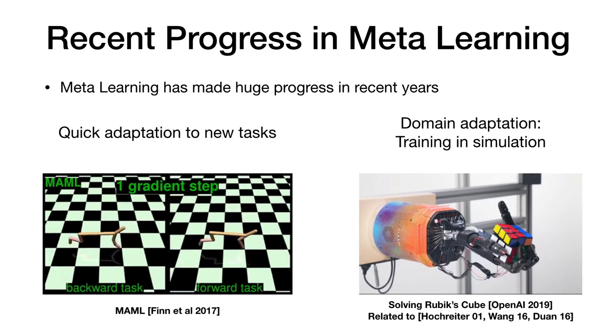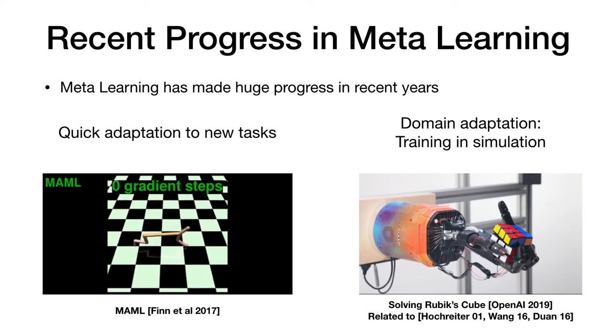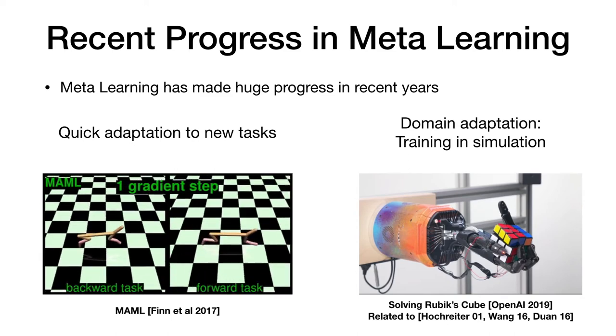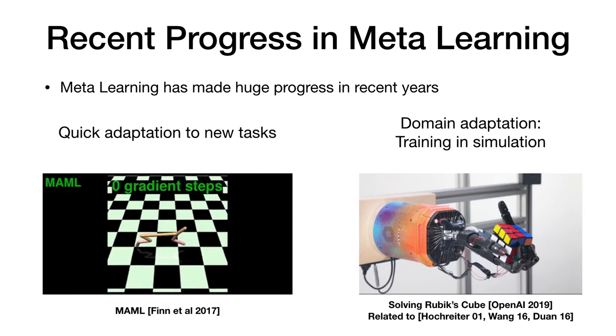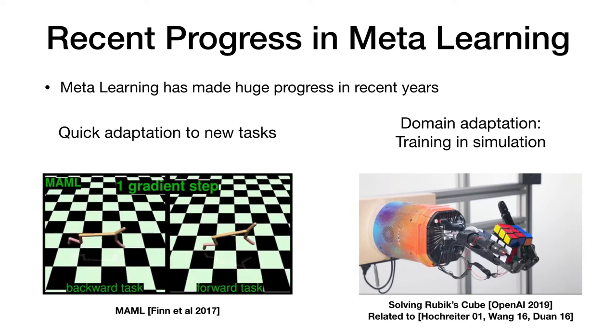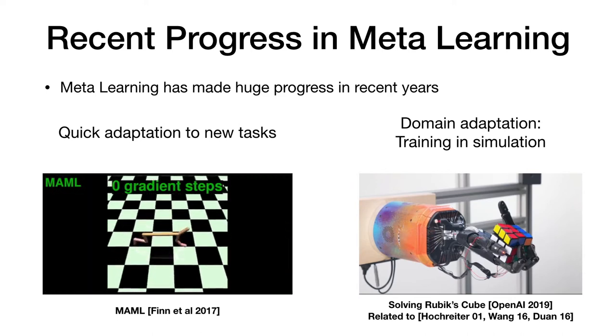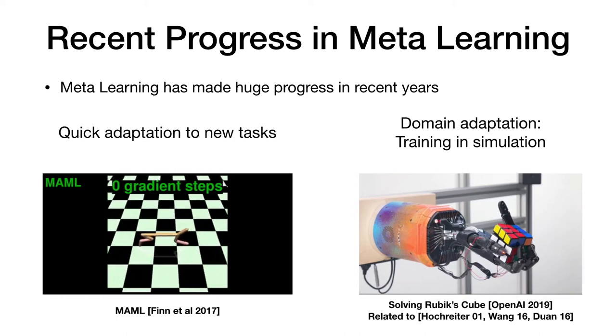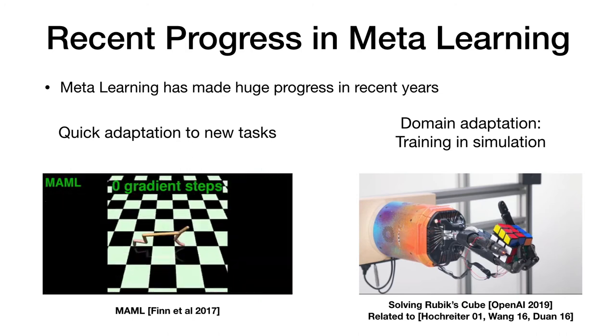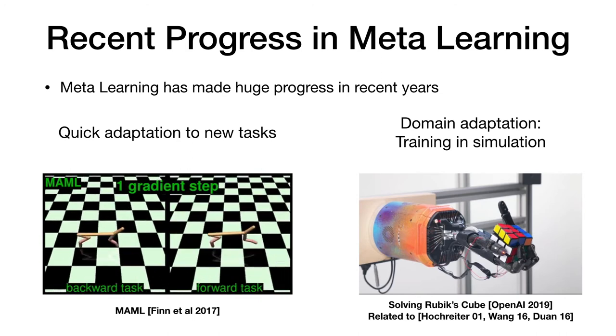Meta-learning has made huge progress in recent years. I want to just highlight two different works here among thousands. MAML, for example, has been hugely successful as a method to quickly adapt to new tasks at meta-test time. This makes learning more sample efficient through meta-learning. Meta-learning has also been used for domain adaptation. That means meta-training is done across environments with different physical properties which allows adapting from simulation to the real world. Also note that I focus on IRL at the moment, but the main ideas equally apply to supervised learning.